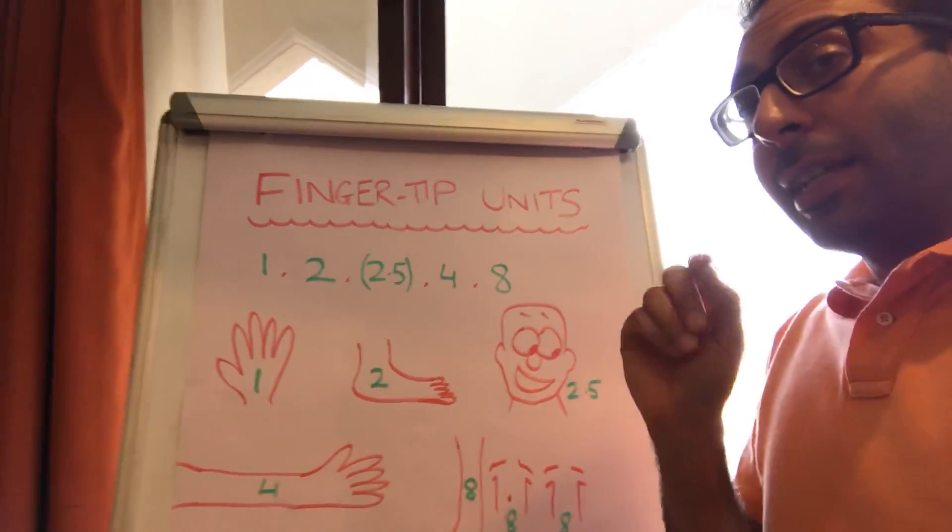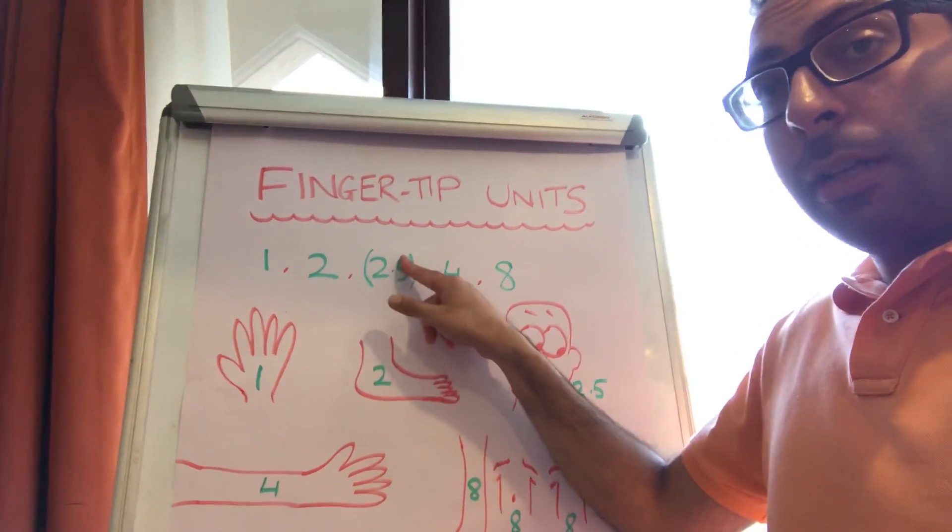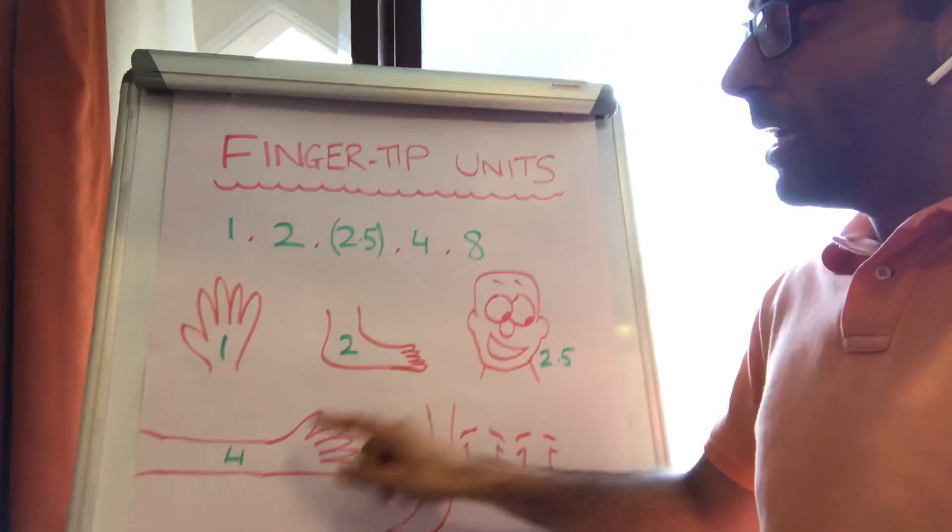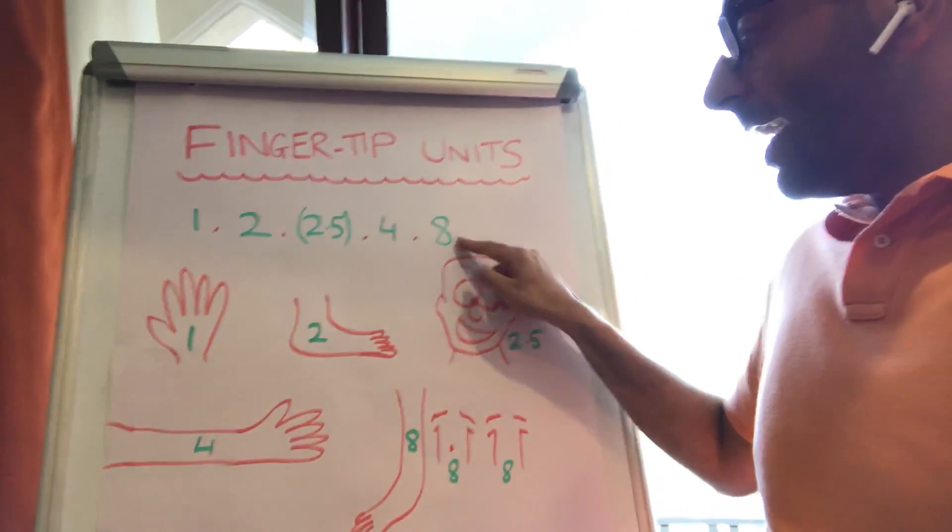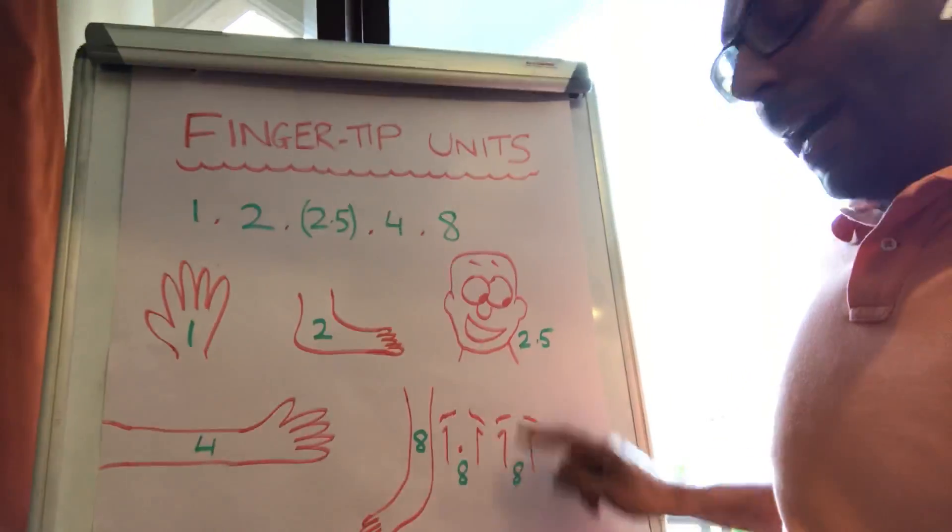So the numbers generally double. One, two, four, eight with 2.5 in the middle. One is the hand, two is the foot, 2.5 is the face and the neck, four is an arm and a hand, and eight is either a leg and a foot or someone's front or someone's back.